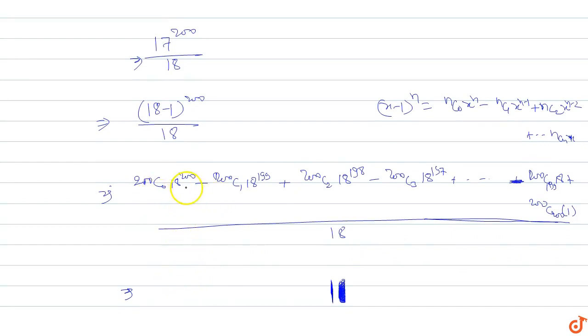When we divide 18 power 200 by 18, the value remainder is zero. When we divide 18 power 199 by 18, the value is zero. All these terms divide evenly.